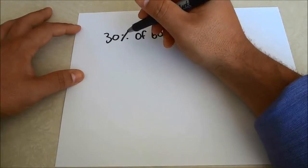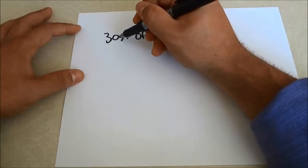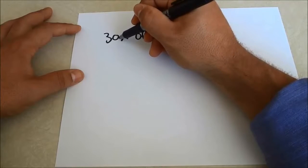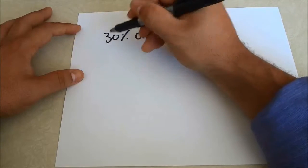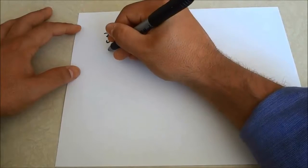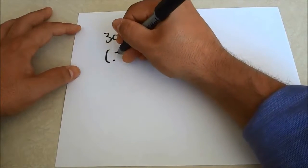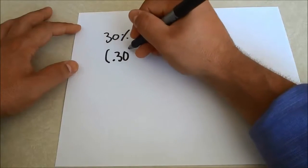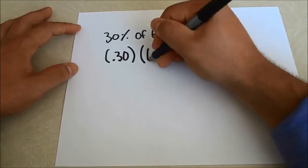The 30% we are going to convert to a decimal, and to do that I'm going to take the decimal spot and move it two spaces to the left. So it would be 0.30, and I'm going to multiply that by 60.